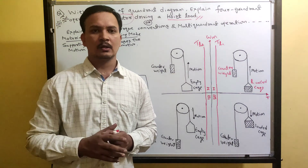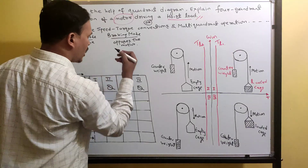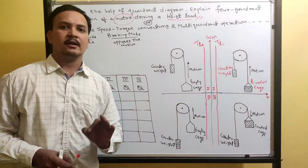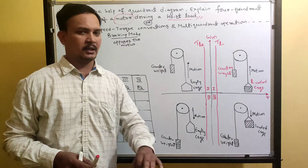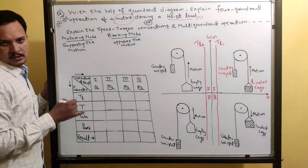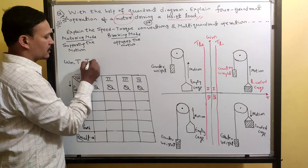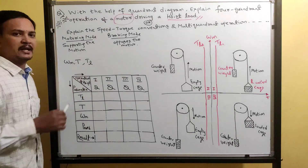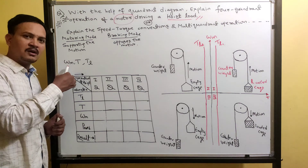These two modes are very important to understand the hoist load. Motoring mode supports the motion and braking mode opposes the motion. To understand the entire operation of hoist load, we take standard practical assumptions. The parameters we discuss are speed, motor torque T, and load torque TL. These three parameters may be clockwise or anti-clockwise. The direction depends on whether the torque is supporting or opposing the motion.